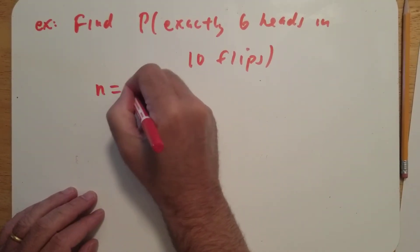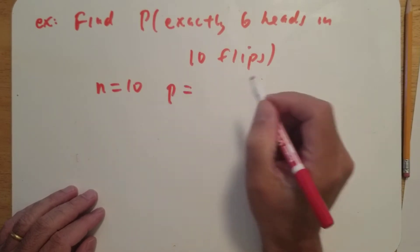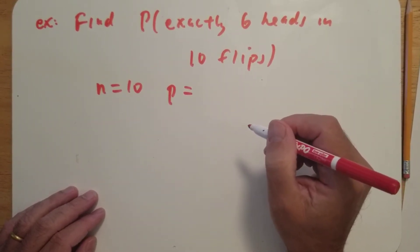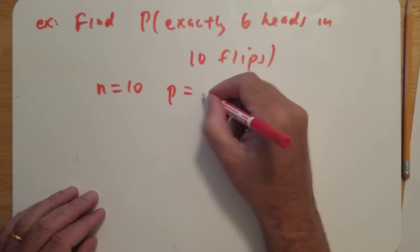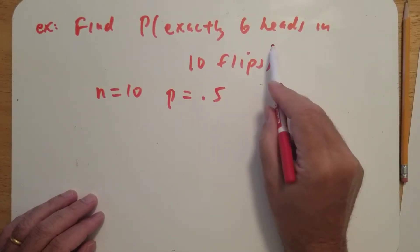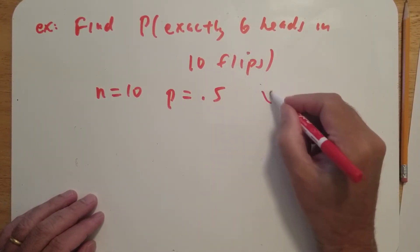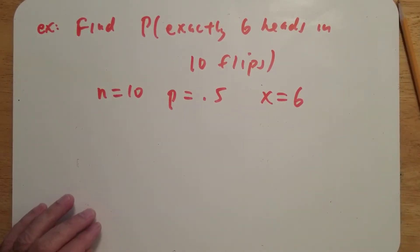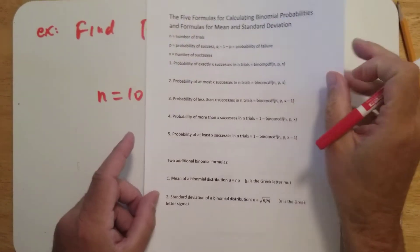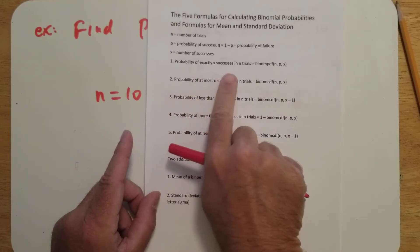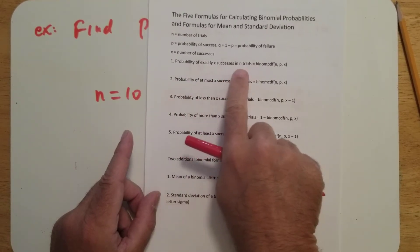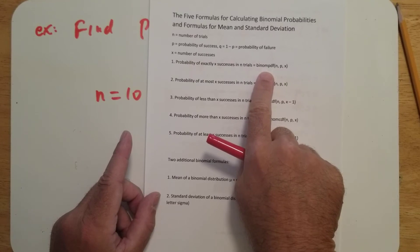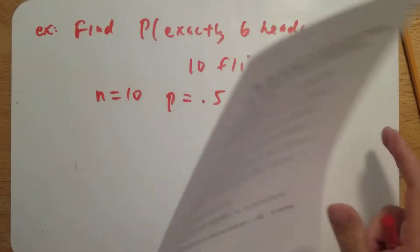So n is 10. The probability of success — since flipping a head is a 50% chance — p is 0.5, and x is the number of successes, so x equals 6. According to the handout, the probability of exactly x successes in n trials uses binompdf(n, p, x).